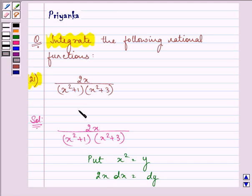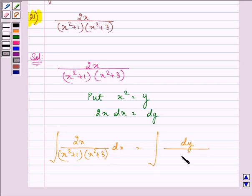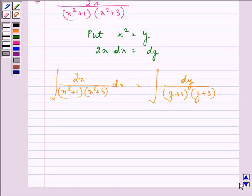So integrating this function, we can write 2x upon x square plus 1 into x square plus 3 dx can be written now as dy upon y plus 1 into y plus 3. Now here, by using the concept of partial fractions,